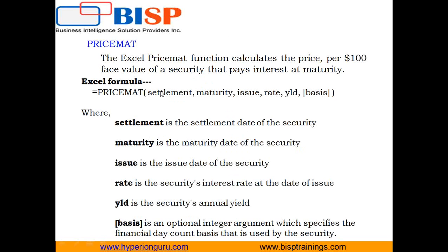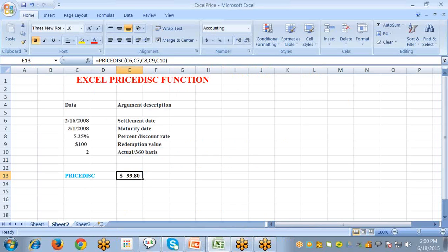The next function I'm talking about is the Price Mat function. One common type of investment is a bond that pays interest at maturity. You can calculate its price per $100 of redemption value using Price Mat. This function requires six arguments: settlement date — the date you take control of the investment; maturity date — the last day of the investment when all money is due; issue date — the first day the bond was initiated and made available for sale; discount rate — the interest rate applied to the bond; yield — the amount the bond pays per year; and basis — the way you count days in a month and year.